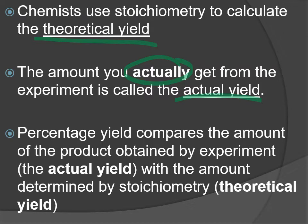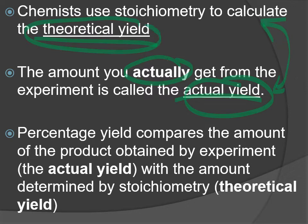The percentage yield compares those two values. The actual yield is always going to be a portion of the whole theoretical yield. The theoretical yield is your maximum amount — that's if everything went perfectly. In reality, your actual yield is going to be less than that, so the actual yield will always be a fraction of the theoretical yield, and we can express that fraction as a percentage.